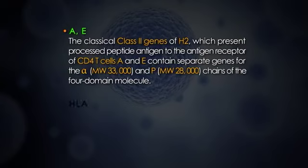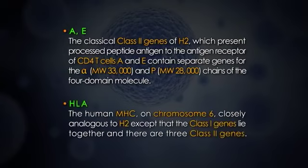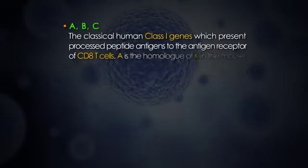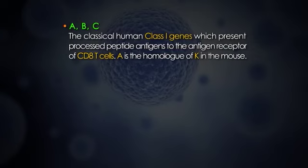The human MHC on chromosome 6 is closely analogous to H2, except that the class 1 genes lie together and there are three class 2 genes. HLA-A, -B, and -C are the classical human class 1 genes which present processed peptide antigens to the antigen receptor of CD8 T cells. HLA-A is the homolog of K in the mouse.